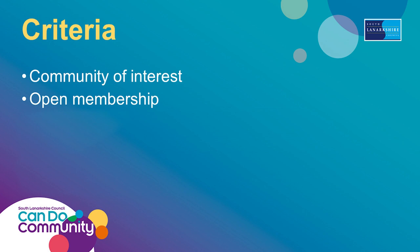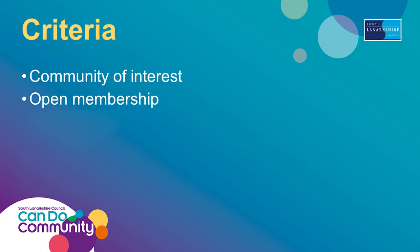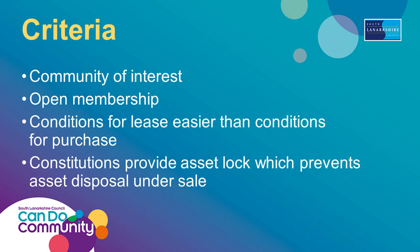When groups wish to apply, we need to look at their suitability to make sure they meet the criteria set out by the government. It is important that their constitution or governing document meets certain criteria, and we will look at this along with the group. Requirements include open membership — people cannot be precluded from joining your group. It can be a community of interest or geography: geography meaning people from a certain area, or interest meaning a group of people interested in football, for instance. You can lease or purchase under this legislation; however, the requirements for purchase are much more complex and more information is required than for a lease. The majority of applications are for lease terms, which can vary depending on your needs and the council's needs.